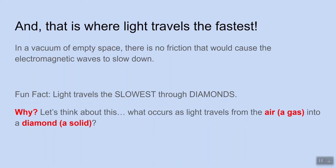Now, what is occurring as light travels from the air, which we know is a gas, one type of medium, into a diamond, which is a solid? What is happening there as the light travels from the air into a diamond?